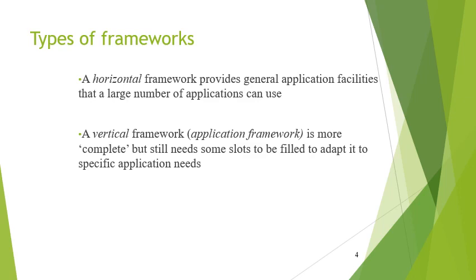Types of frameworks — there are two types: horizontal and vertical. Horizontal frameworks provide general application facilities that a large number of applications can use. For example, there is a preference dialogue that allows a user to specify many kinds of options, and a horizontal framework could be designed that would provide general preference dialogue facilities for many different applications.